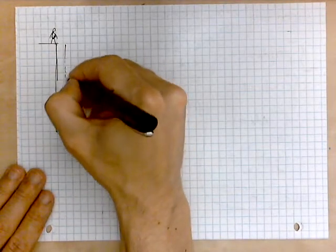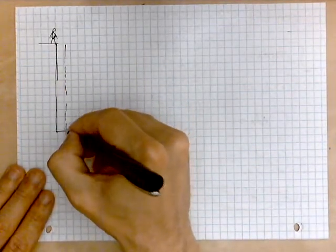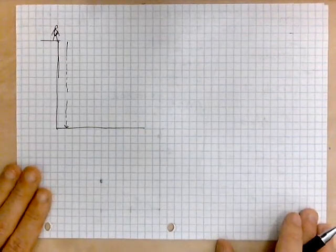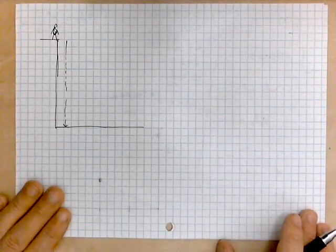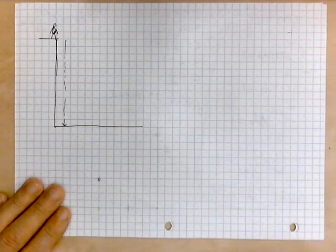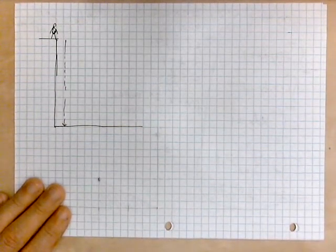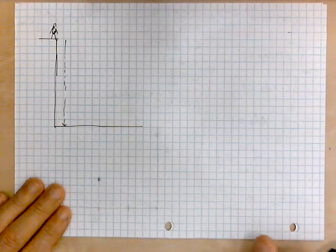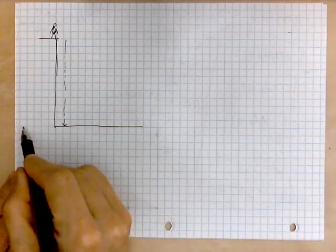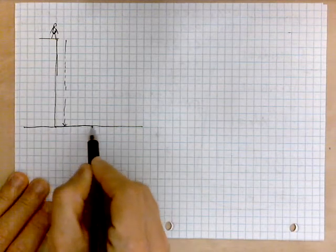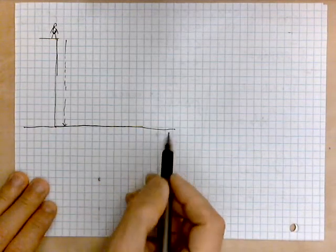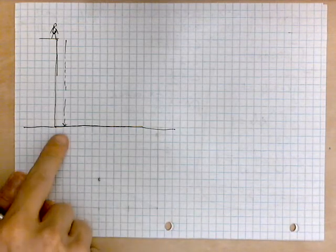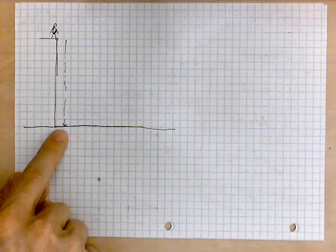And then the object travels straight down until it strikes the ground down below. So one approach is to do the following. Assume conservation of energy and then whatever potential energy is stored in the system relative to this level that I'm tracing will be converted into kinetic energy once the object is striking the ground at this instant.